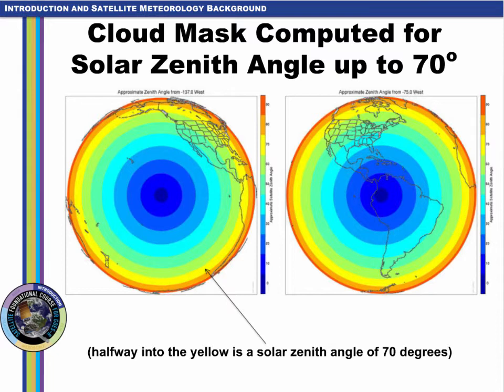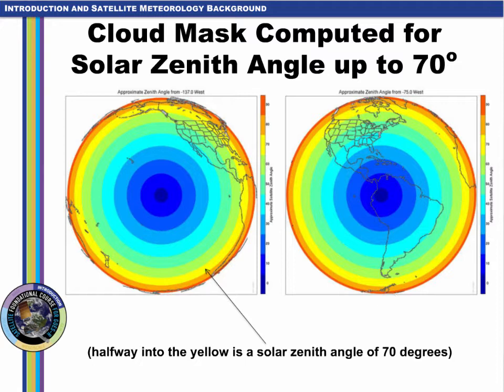Cloud mask is computed up to a solar zenith angle of 70 degrees, which is shown graphically here for the GOES-West and GOES-East locations. Some cloud products computed subsequent to cloud mask are not computed all the way out to 70 degrees — they cut off at 62 degrees or 65 degrees.